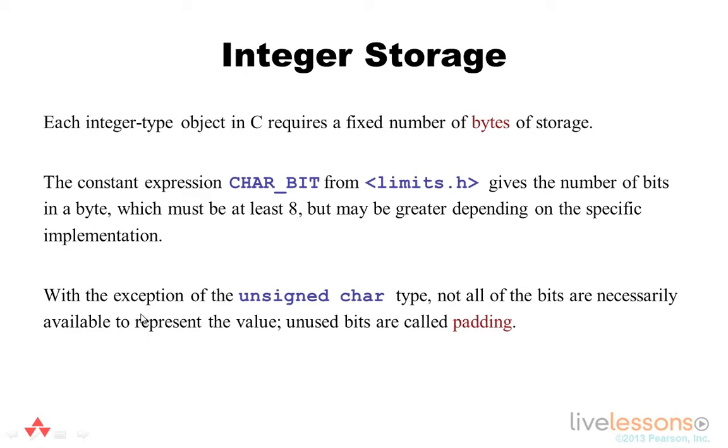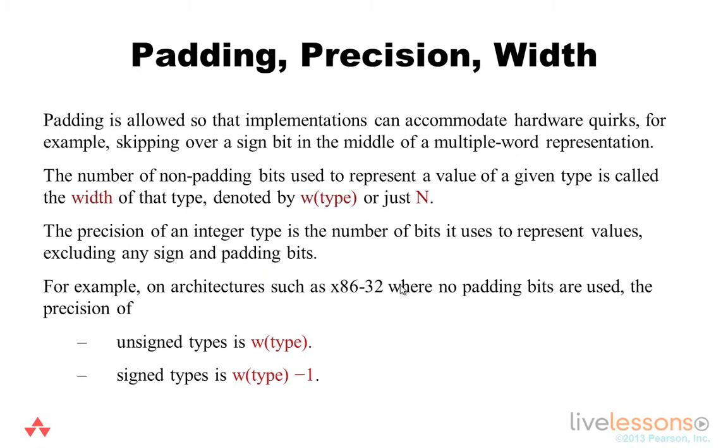With the exception of the unsigned character type, not all the bits are necessarily available to represent the value. Any unused bits are referred to as padding. Padding is allowed by the standard so that implementations can accommodate various hardware quirks, for example, skipping over a sign bit in the middle of a multiple-word representation.